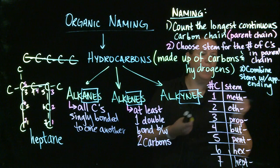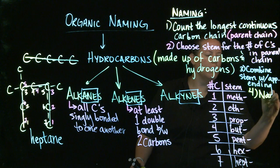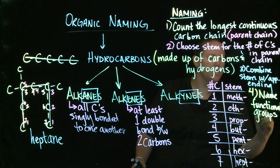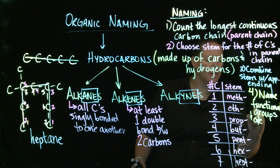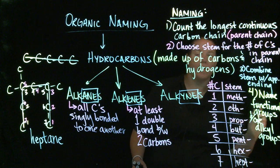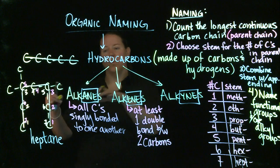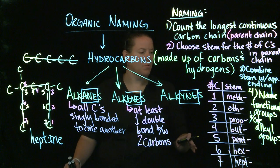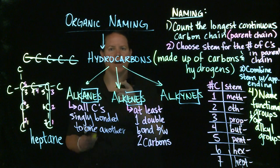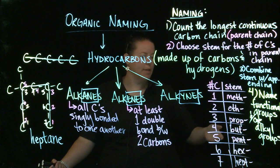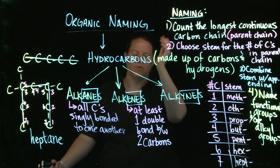After you're done with that, you need to name functional and alkyl groups because those are going to change the name. Functional groups can come before the name, they can change the name, or they can totally defy convention. Some functional groups are so important they have their own class, but we're going to treat them all as if they're under this hydrocarbon framework.